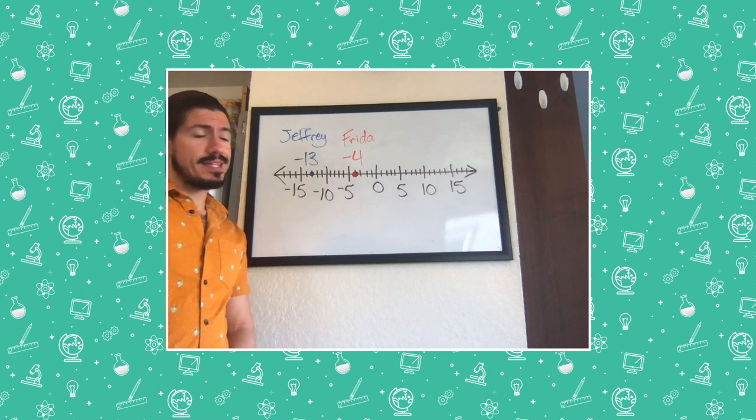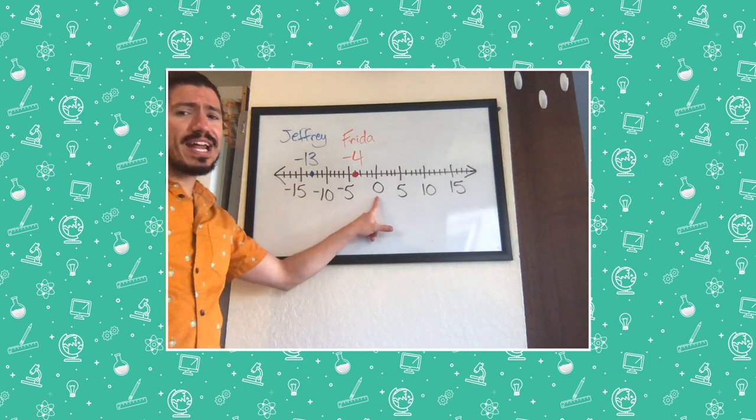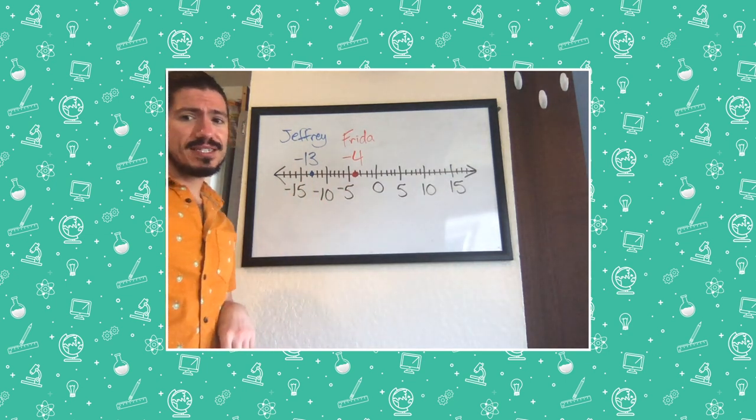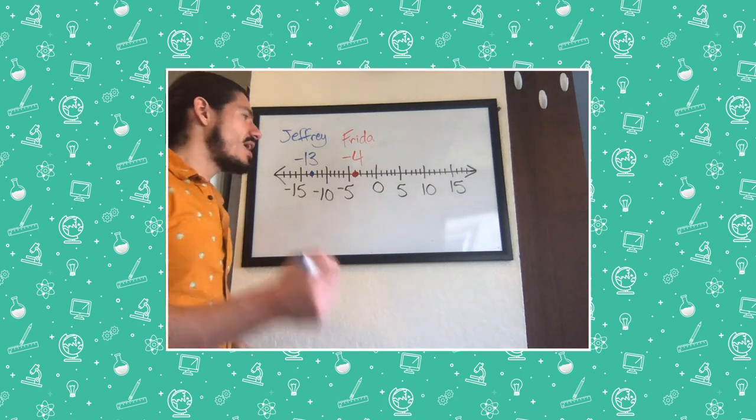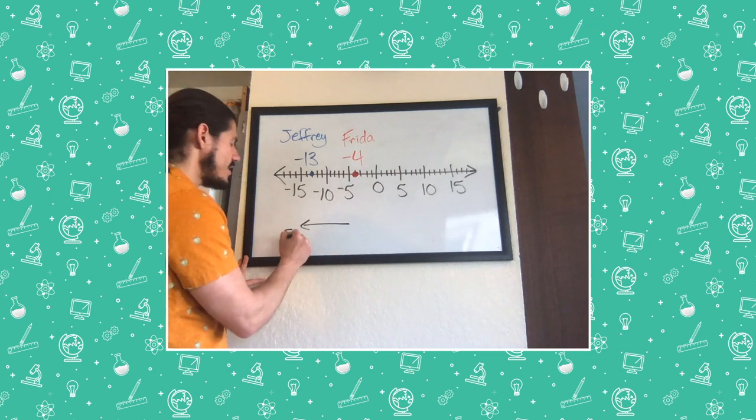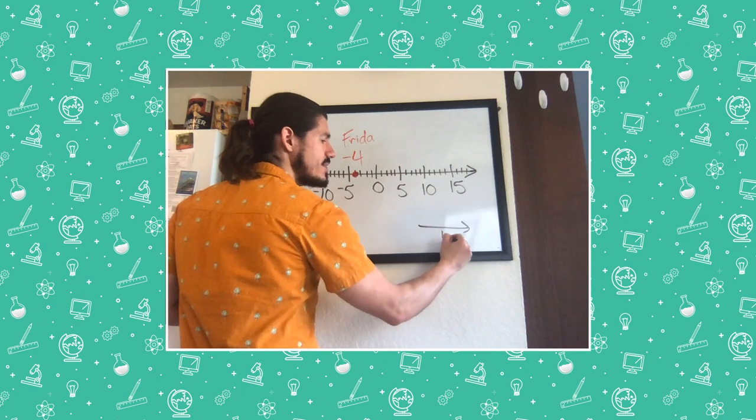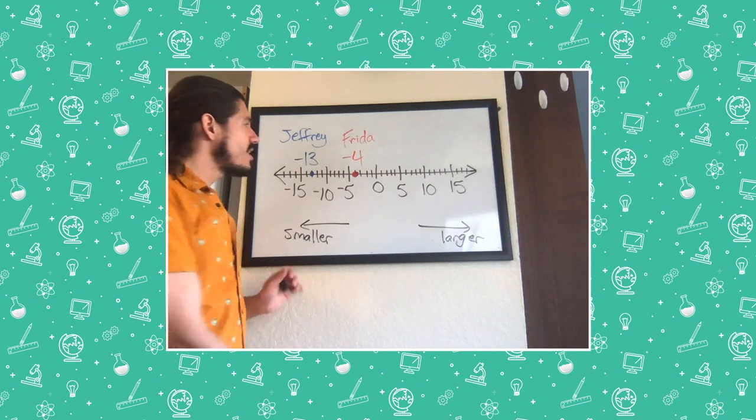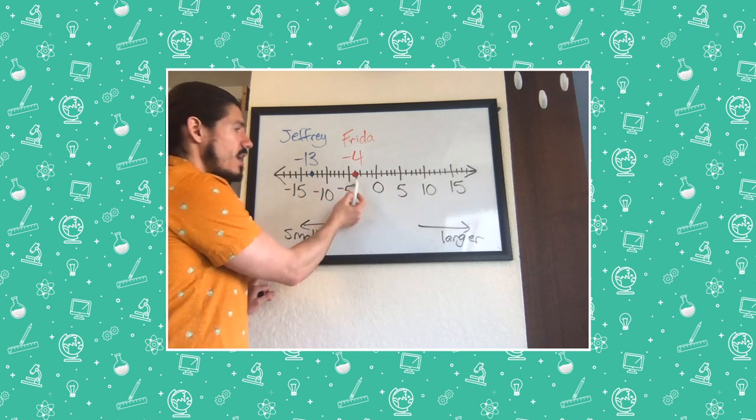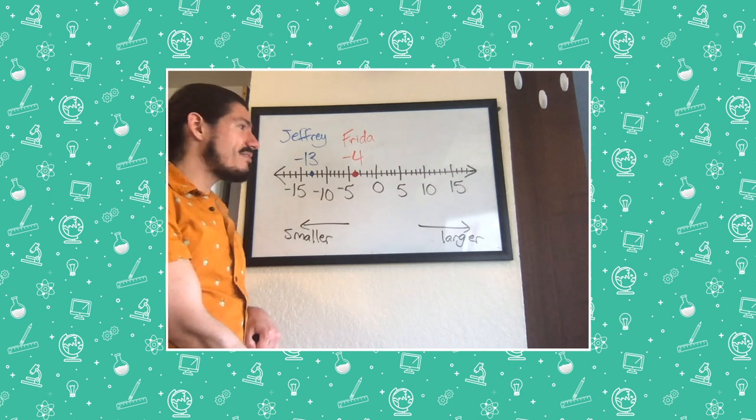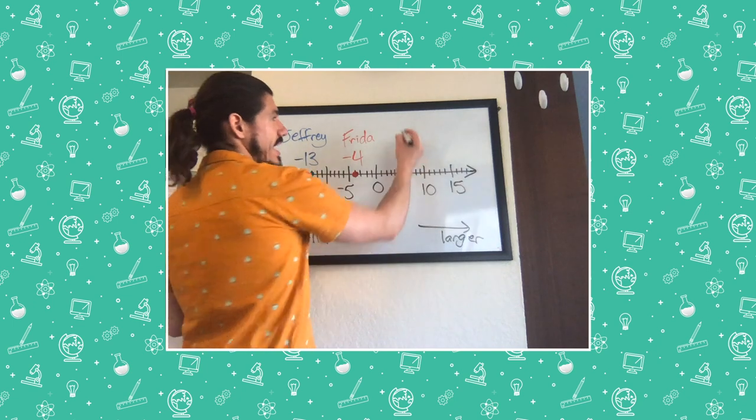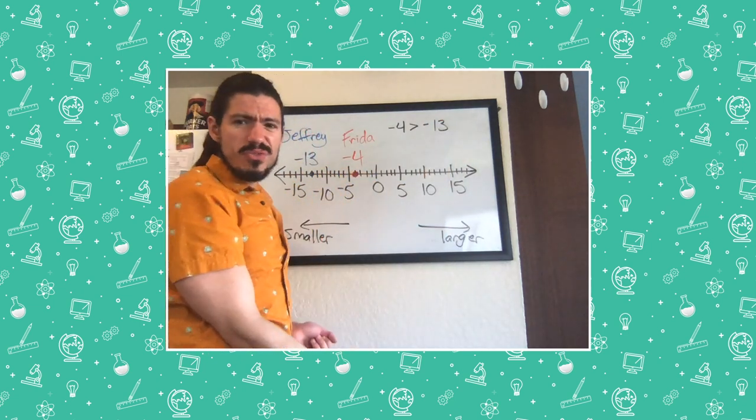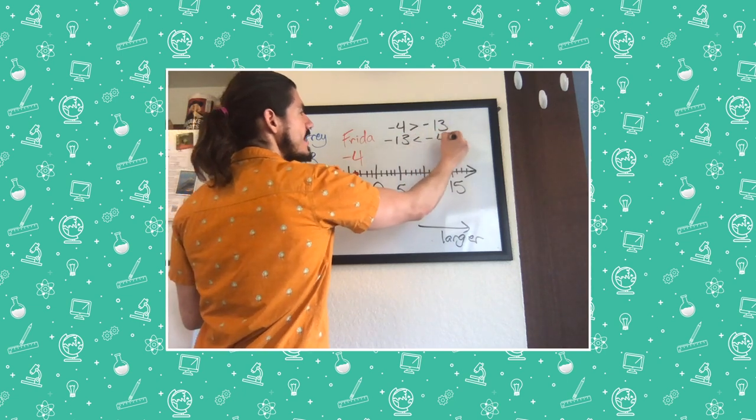I decided to make a bigger number line to help me see who won. So we can see here, both Frida and Jeffrey have negative scores, because they're both to the left of zero. Frida got negative four, Jeffrey got negative 13. When we're looking at a number line, we need to remember that numbers going further to the left are going to be smaller. Farther to the right are going to be larger. Who's further to the left and who's further to the right? Well, I can see here that Jeffrey is to the left of Frida, and Frida is to the right of Jeffrey. So Frida must have a higher score. We could write this mathematically by saying negative four is greater than negative 13. We could also flip that around and say negative 13 is less than negative four.